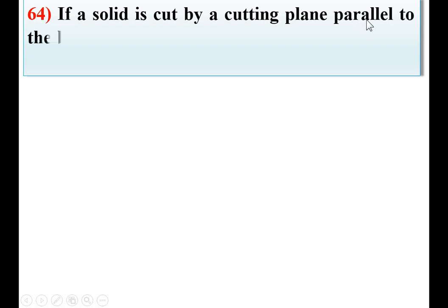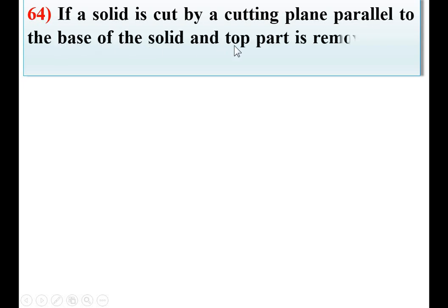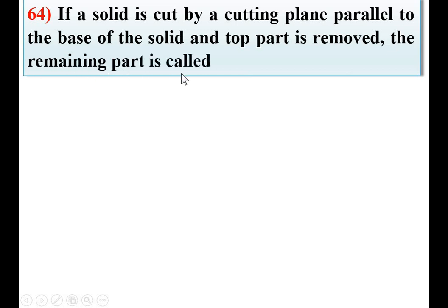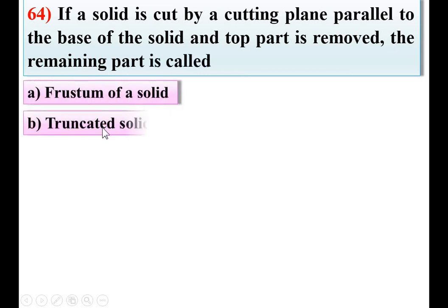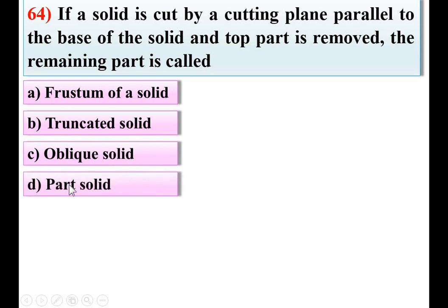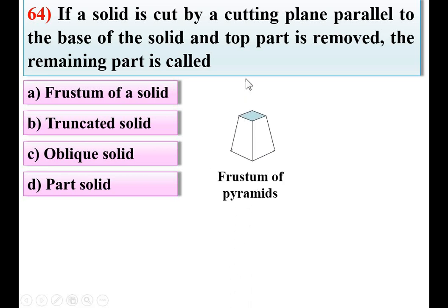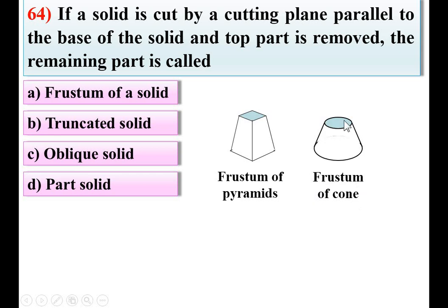Question 64: If a solid is cut by a cutting plane parallel to the base of the solid and the top part is removed, the remaining part is called — option A: frustum of a solid, B: truncated solid, C: oblique solid, D: part solid. This is a square pyramid; the top part is removed — meaning the part containing the apex is removed. Then the remaining portion is known as the frustum of the pyramid. If it is a cone, it is called the frustum of the cone. So the answer is A, frustum of a solid.